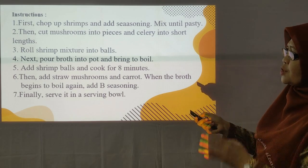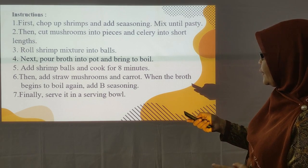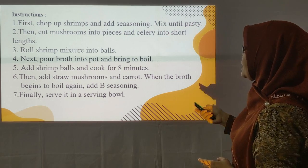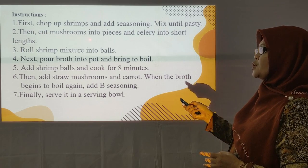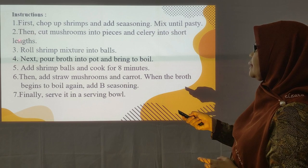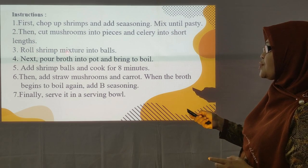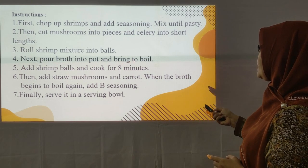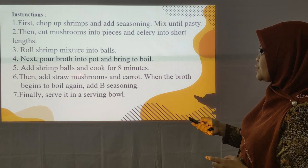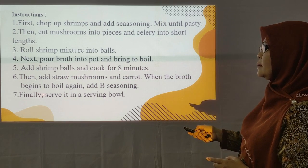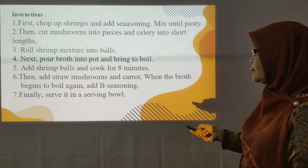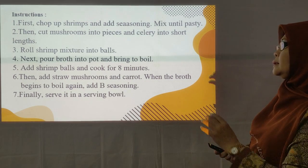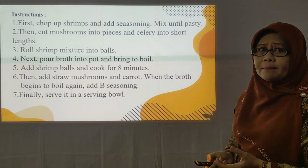Of course it will be continued with instructions or steps. There are some steps: first, chop up shrimp and add seasoning, mix until tasty. Then cut mushrooms into pieces and celery into short lengths. Roll shrimp mixture into balls. Pour broth into pot and bring to a boil. Cook shrimp balls for 6 minutes. Finally, serve in a serving bowl. That is the example of procedure text in the form of a recipe.